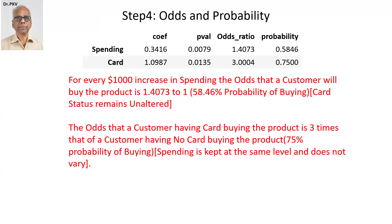You can see the Python output. The coefficient is displayed for spending and card. The p-value is there for ready reference. The odds ratio is given with probability alongside: 1.4073 for spending, 3.0004 for the card, and the corresponding probabilities are displayed here. So let's interpret. For every $1,000 increase in spending, the odds that a customer will buy the product is 1.4073 to 1, with a 58.46% probability of buying.